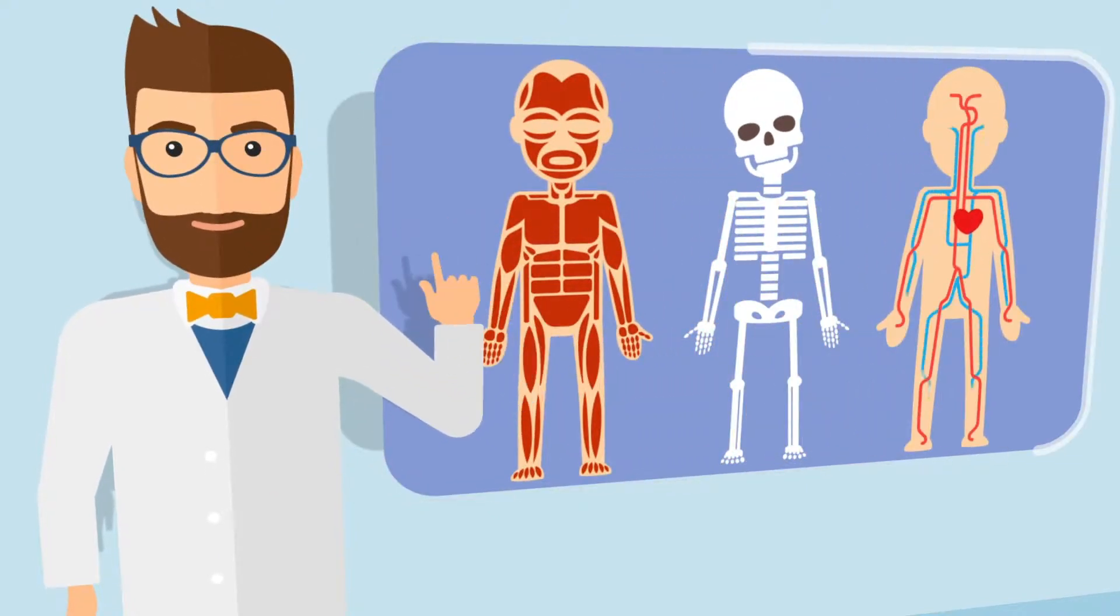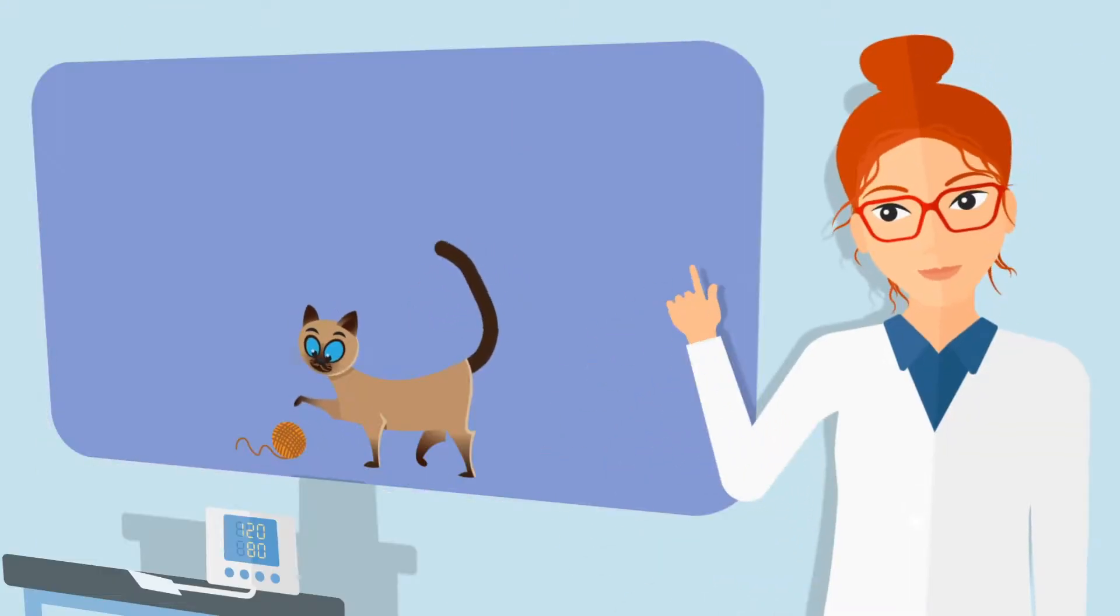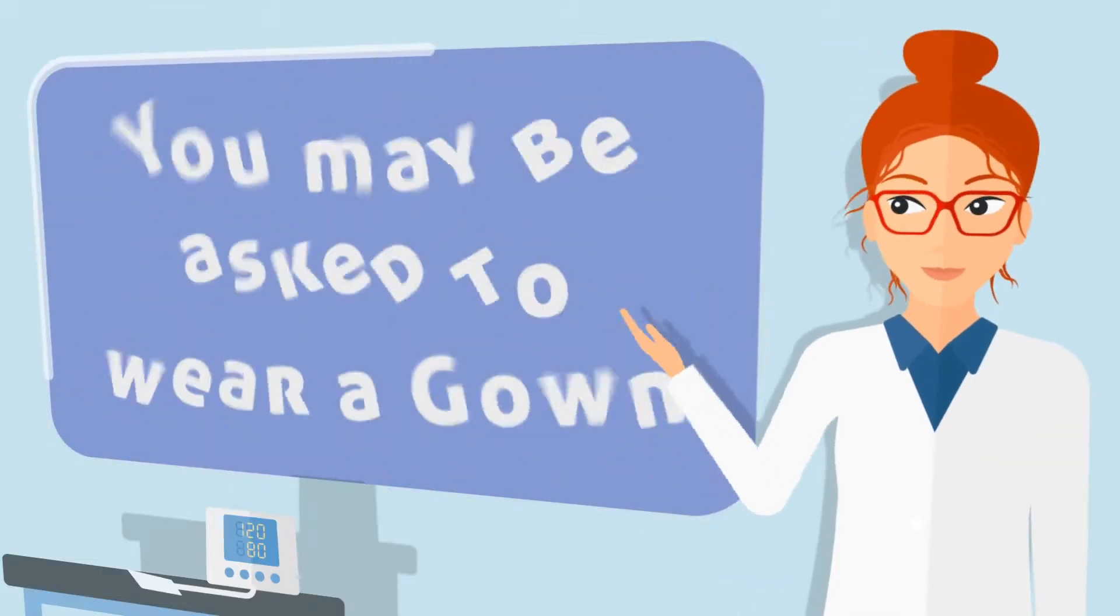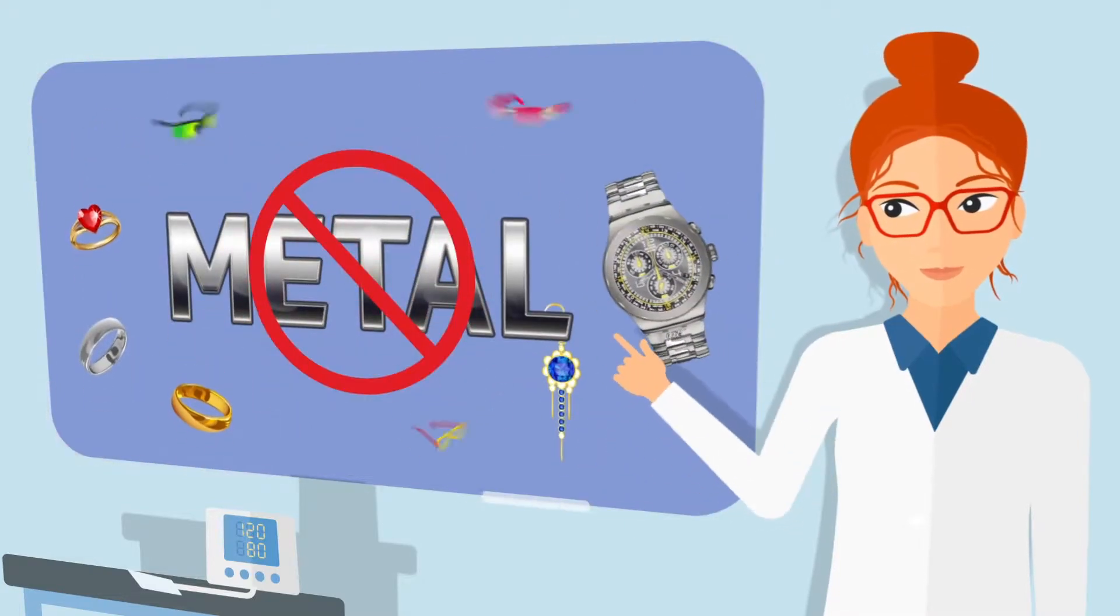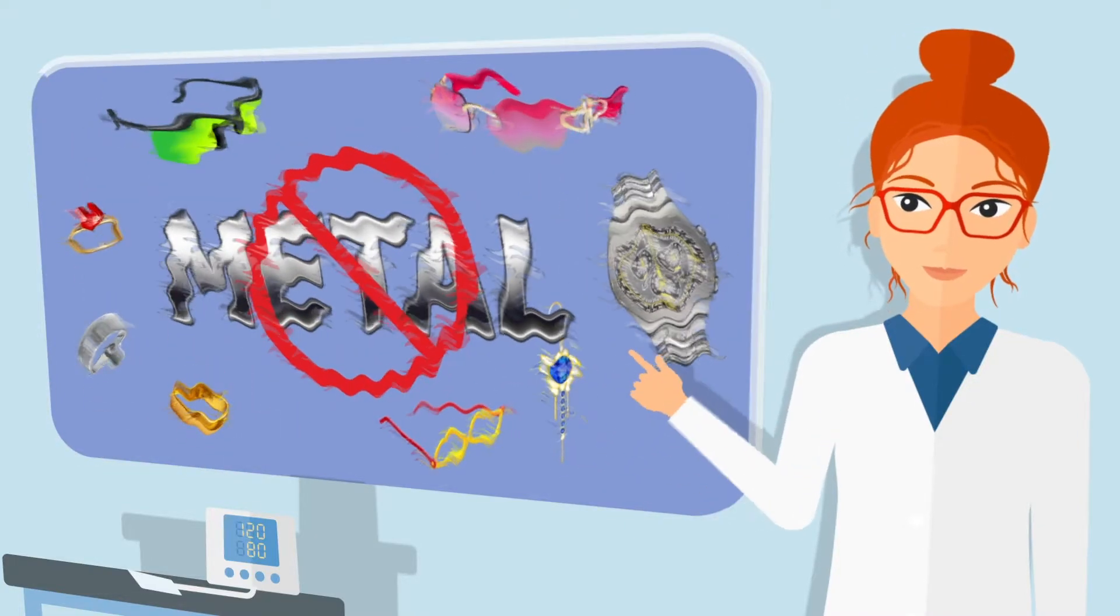Depending on what part of your body is being scanned, you may be asked to wear a gown and remove any metal items such as a belt, jewelry, and glasses which might interfere with the images.